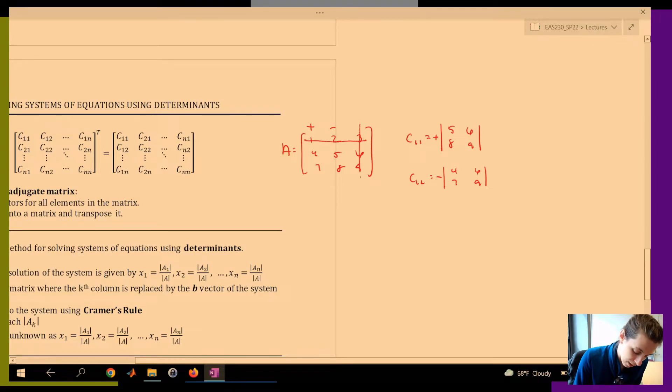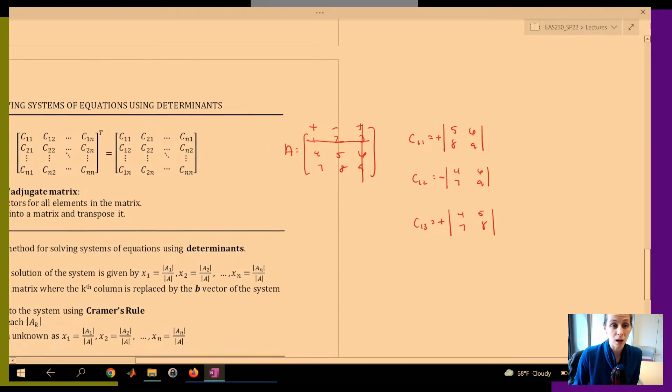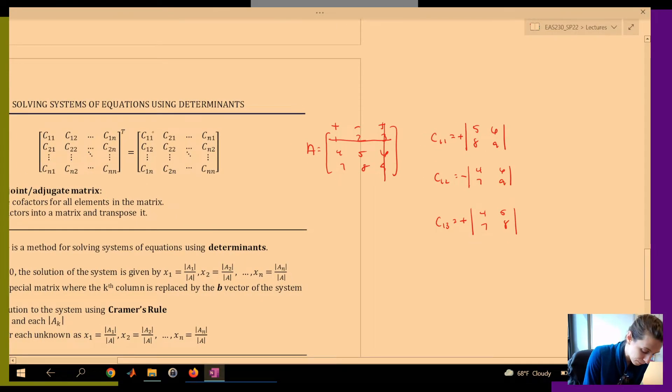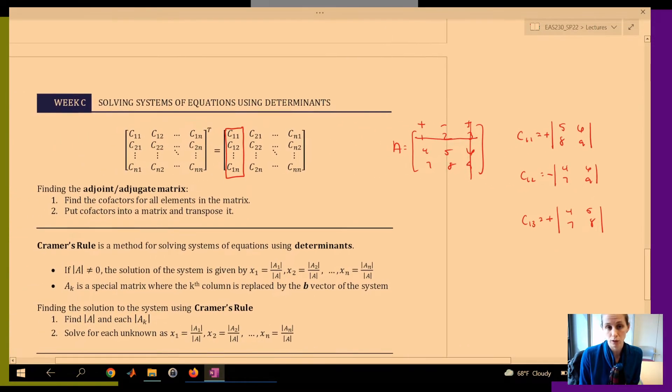And then same thing, C13, I would remove row 1, remove column 3, the determinant is going to be 4, 7, 5, 8. And then the grid here has a plus. So this C11, C12, C13 become the first column in my cofactor matrix, or in my adjoint matrix.